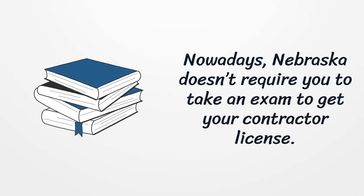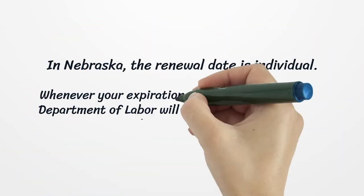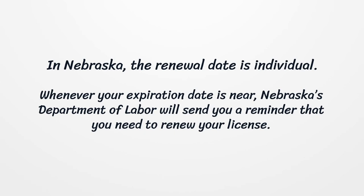In Nebraska, there are generally five levels of contractor licenses: Class A, Class B, Class C, Class D, and Class E contractor license. The renewal date is individual. Whenever your expiration date is near, Nebraska's Department of Labor will send you a reminder that you need to renew your license.